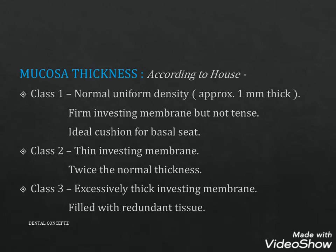Class 1 includes normal uniform density of mucosal tissue approximately 1 mm thick. The investing membrane is firm but not tense and forms an ideal cushion for the basal seat of the denture. In Class 2, the soft tissues have thin investing membranes and are highly susceptible to irritation under pressure, or the soft tissues have mucous membrane twice the normal thickness. In Class 3, the soft tissues have excessively thick investing membranes filled with redundant tissue.